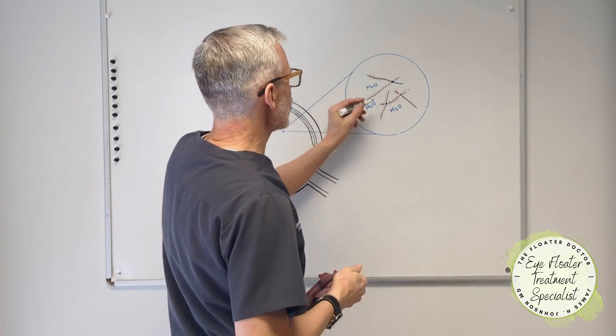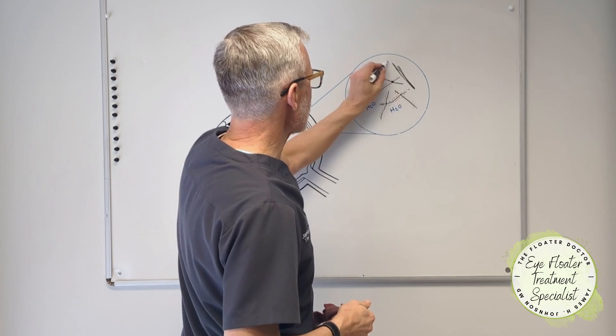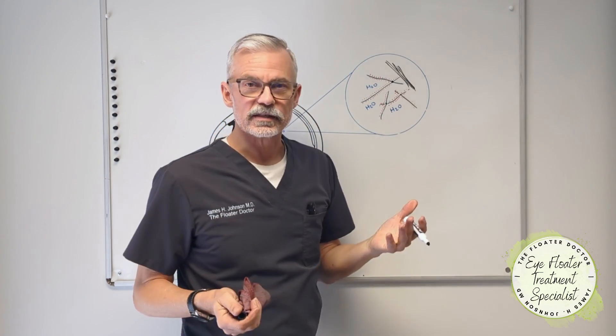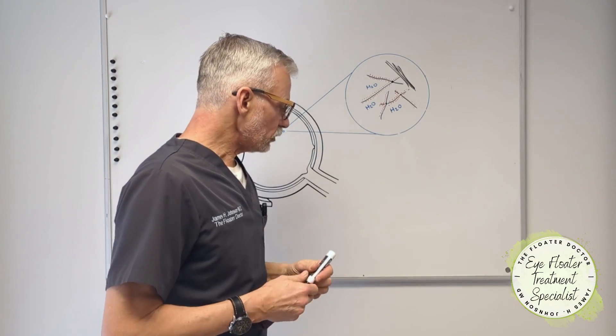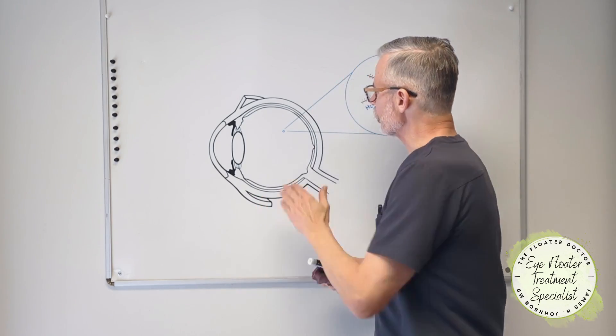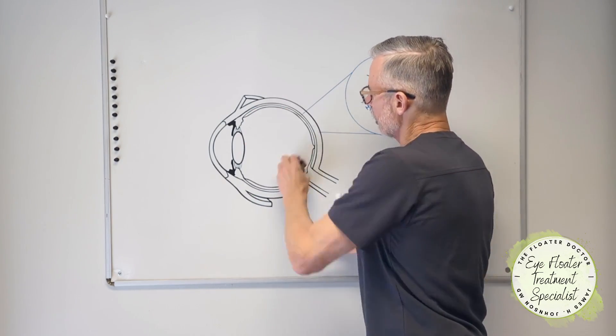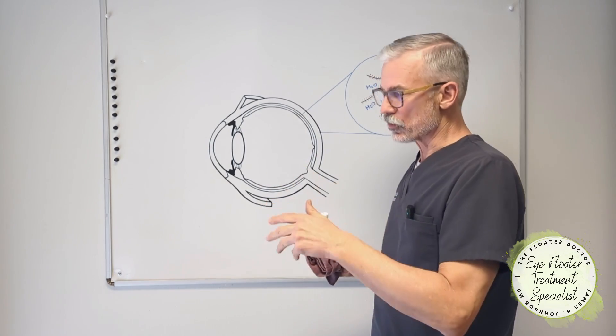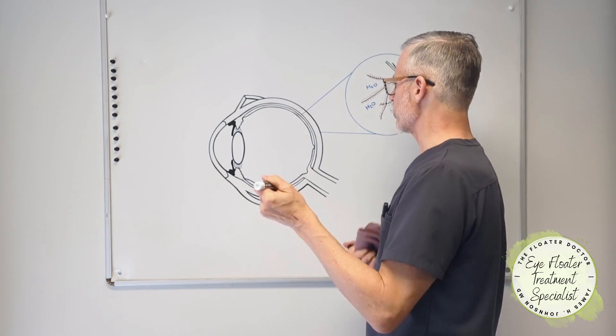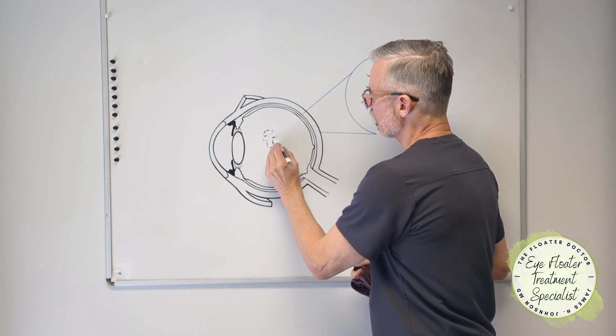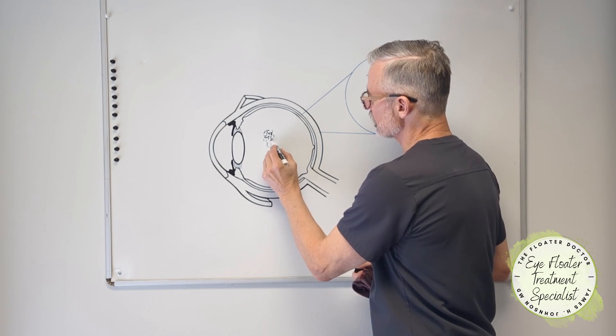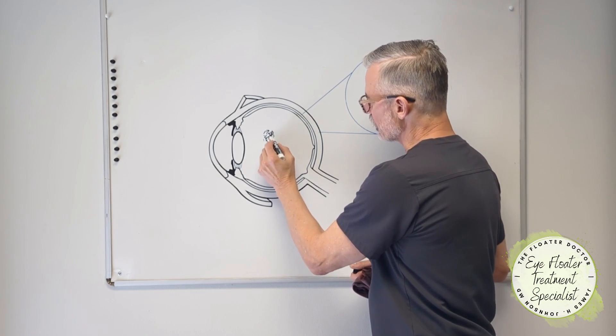So similarly, if you start to get these collagen fibers that are all stuck together, they don't want to unstick. That is a floater. So when people come to me and I do my laser treatment, especially if it's not a white string, not a membrane, not the cobwebs and strands, but especially if we have a dense, optically dense, cloudy syneresis type of floater, I can treat that.